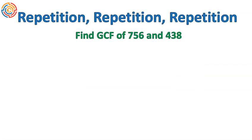We'll now move on to our final example, which will show some repetition. Let's find the greatest common factor of 756 and 438. Be careful — I did not put the numbers in order smallest first and largest second. Set that one up and try it out, then come back to see if you have mastered this algorithm.